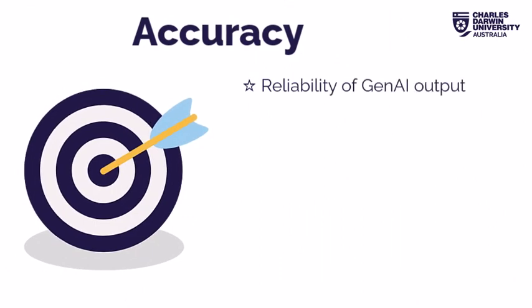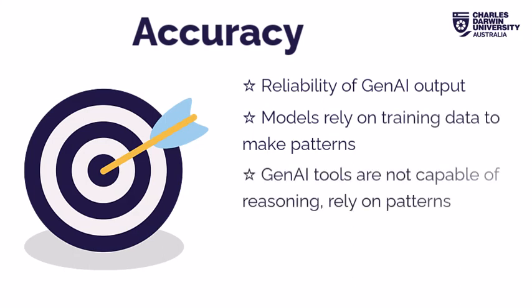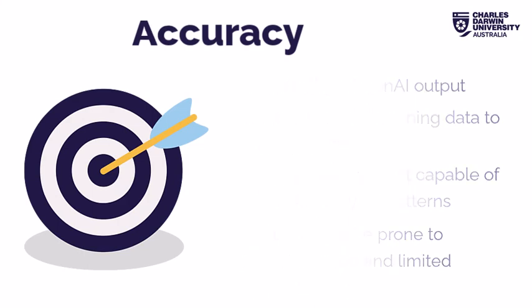Accuracy deals with the reliability of Gen AI output. Models rely on training data to make patterns, and Gen AI tools are not capable of reasoning. When they create output, they are relying on examples in the data to guess what should come next. This means the output can be prone to misinformation and limited understanding.